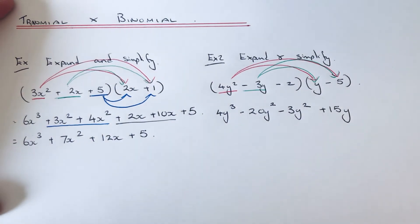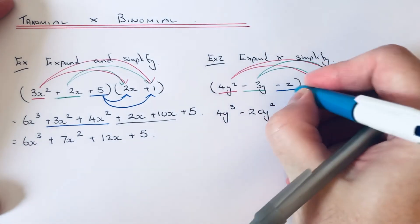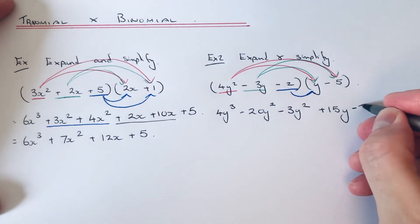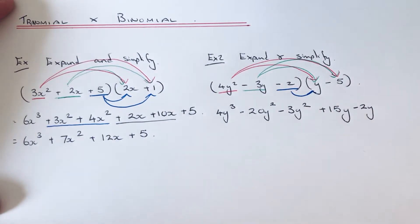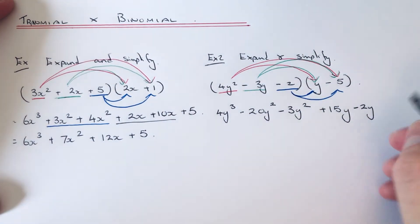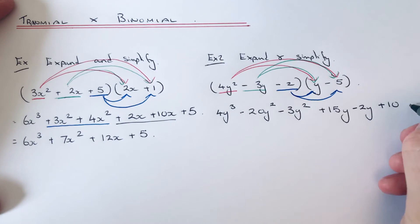Do minus 2 times y, which is minus 2y, and do minus 2 times minus 5, which is plus 10.